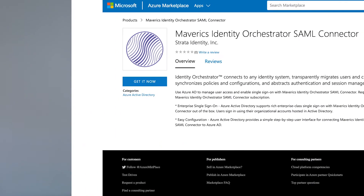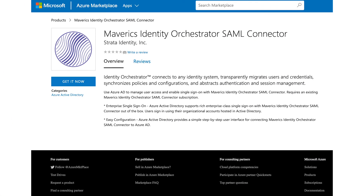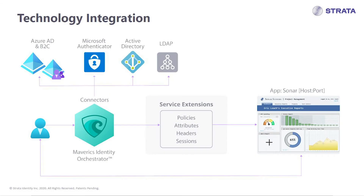We integrate with Azure Active Directory by providing our service through the Azure Active Directory App Gallery. You get the application from the App Gallery and then you deploy the Maverics service either in a VM running on Azure or on-premises. We proxy your applications and then transition your users to start using Azure Active Directory for authentication, and we use standards such as OpenID Connect and SAML so that you don't have to change or rewrite your applications to take advantage of Azure Active Directory.